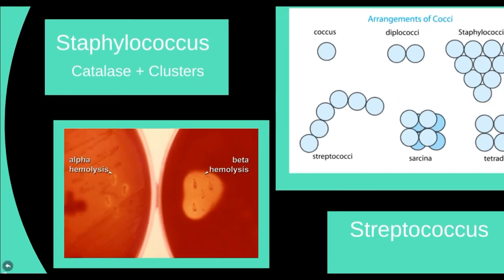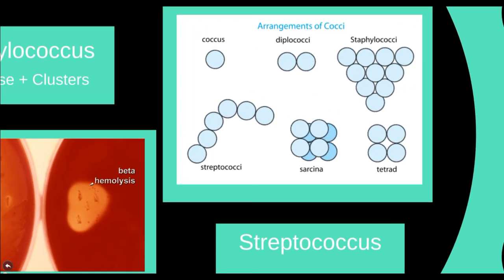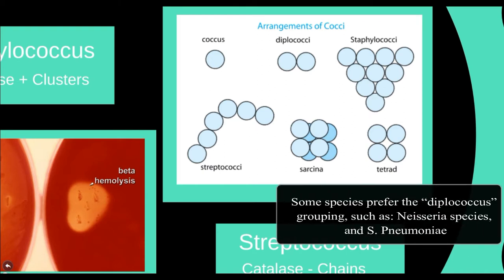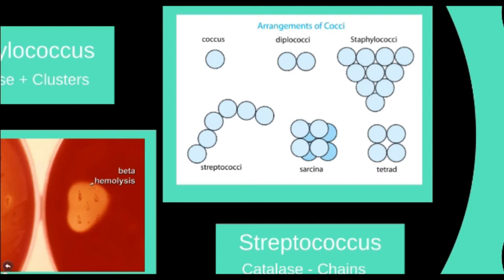Staphylococcus generally forms in clusters, which can help separate out this genus when visualized under the microscope. Streptococcus, on the other hand, is usually in chains. It is also important to note that streptococcus is catalase negative.